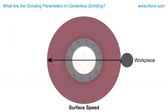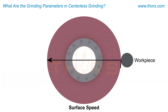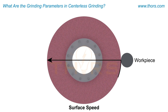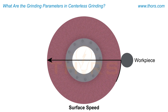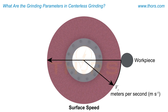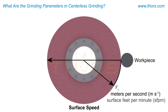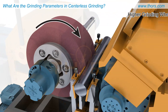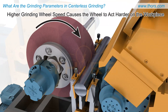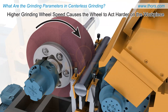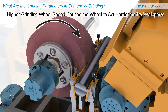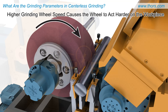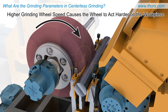Surface speed is the distance traveled by the periphery of the grinding wheel in unit time, and is expressed in meters per second or surface feet per minute. A higher grinding wheel speed may improve the surface finish, however it causes the wheel to act harder on the workpiece.